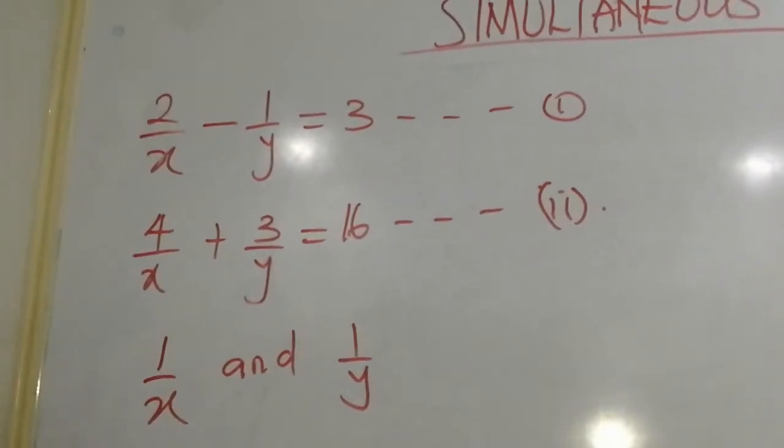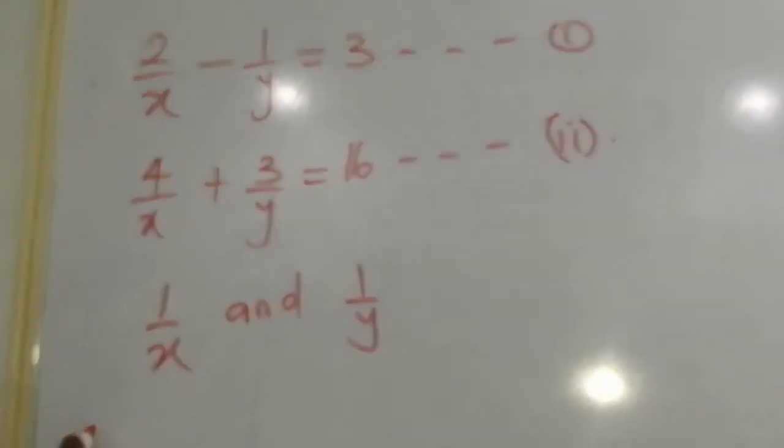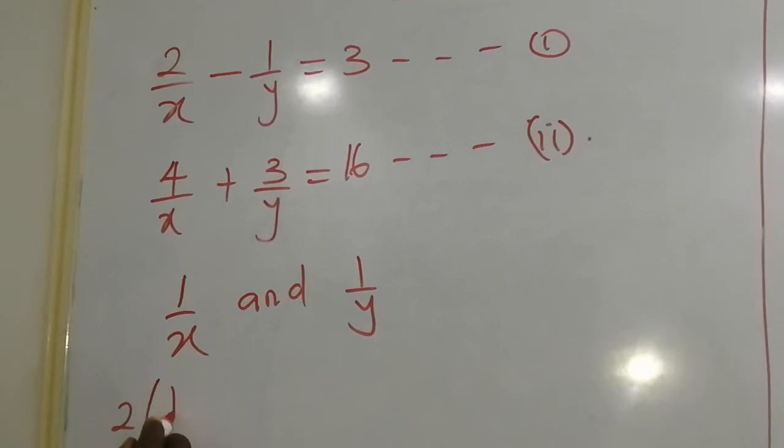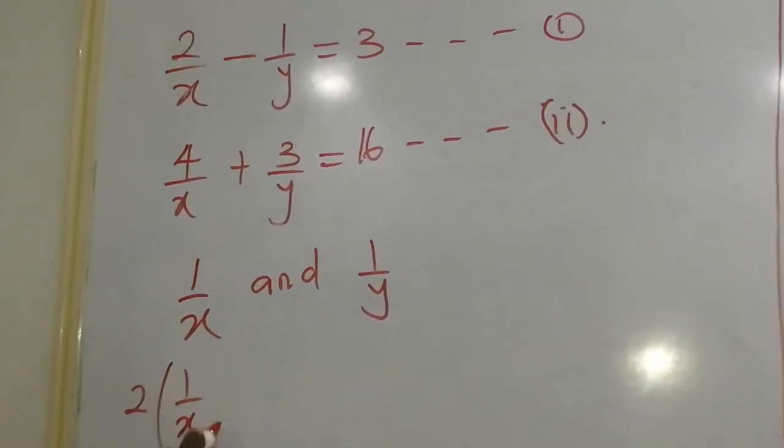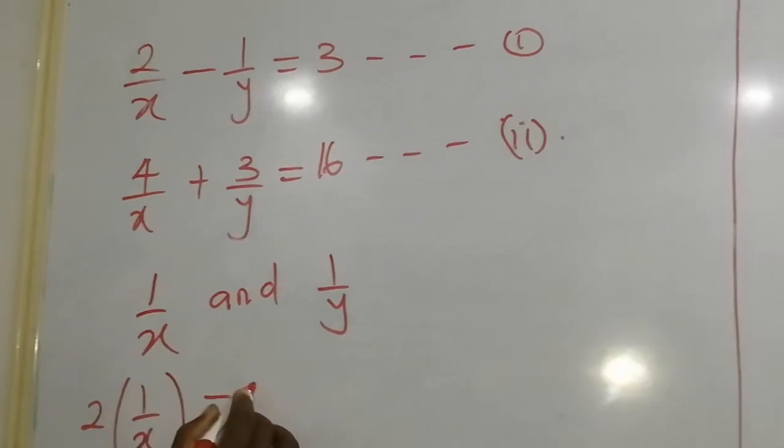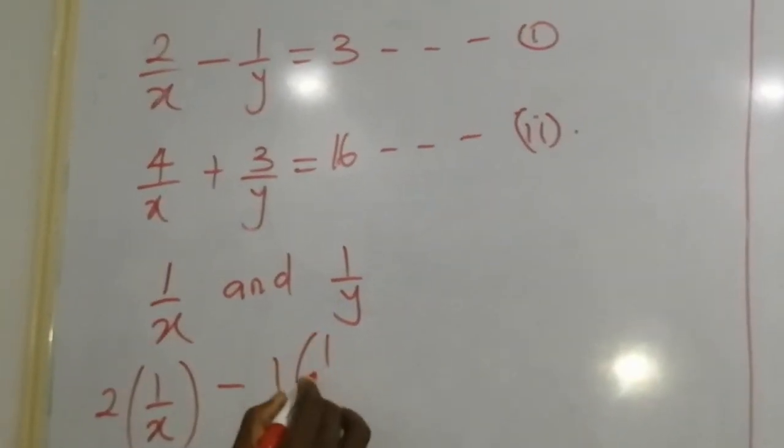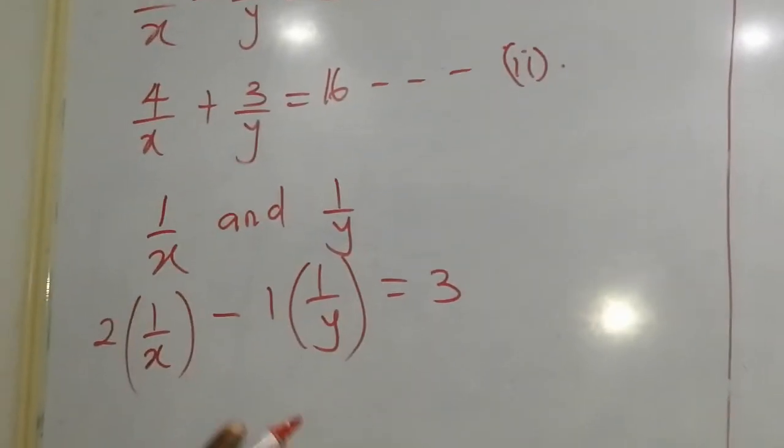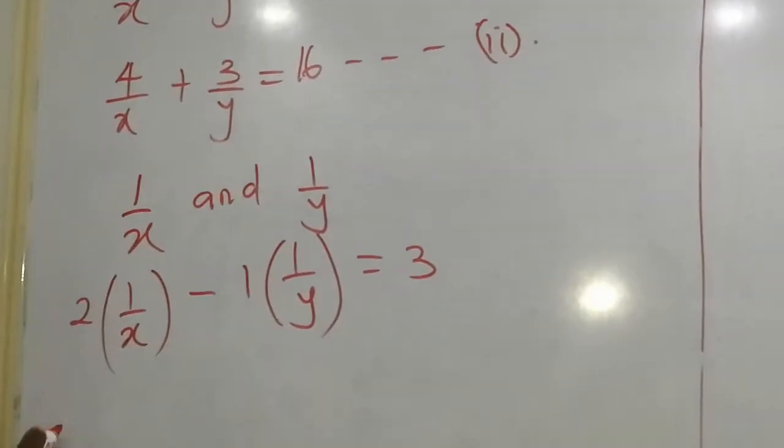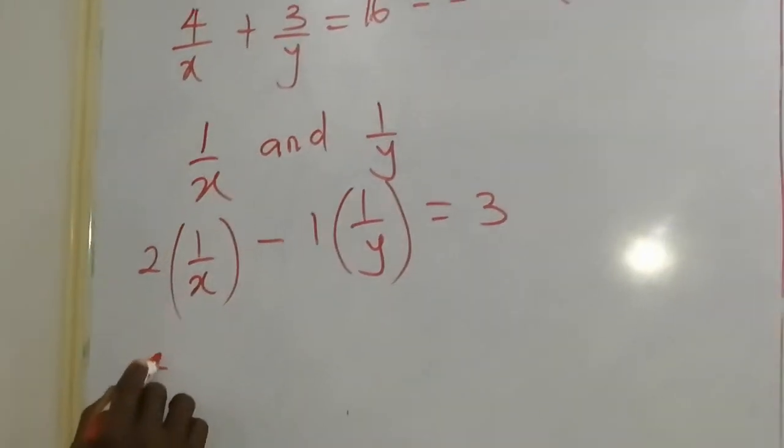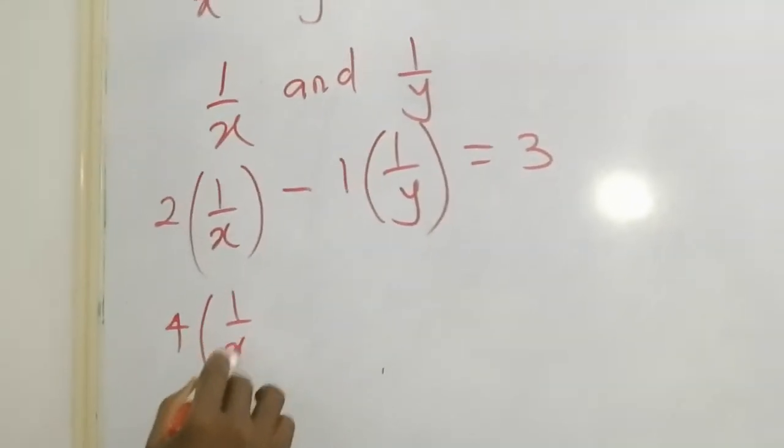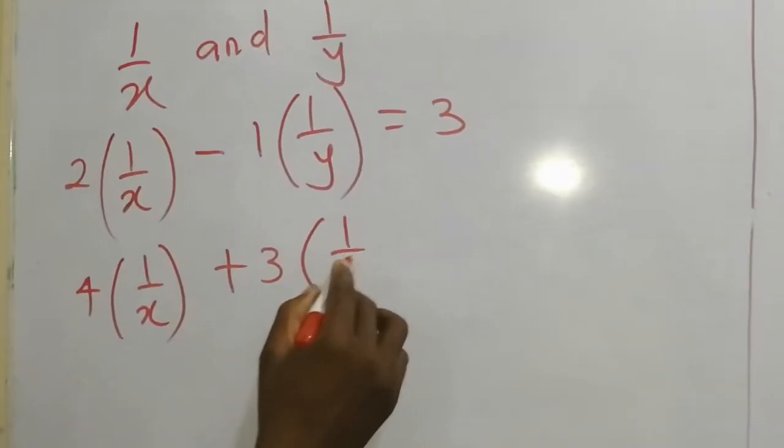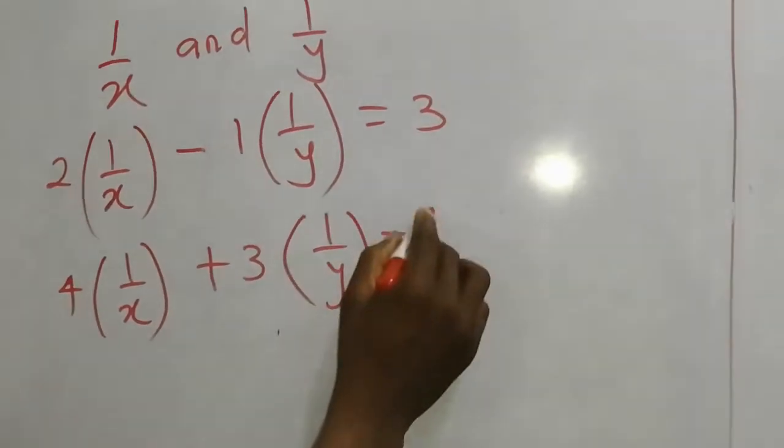So that means you are going to replace this with that. For equation 1, we have 2 into 1 over x minus 1 into 1 over y equals 3. For equation 2, we have 4 into 1 over x plus 3 into 1 over y equals 16.